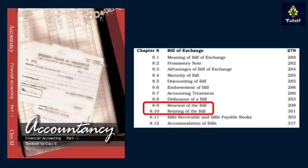Next is Chapter 8. There are two topics removed: 8.9, which is Renewal of the Bill, and 8.10, which is Retiring of the Bill.